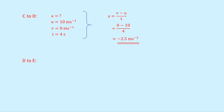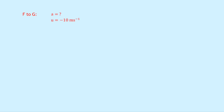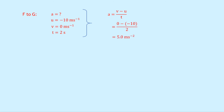For D to E: u equals 0 metres per second, v equals minus 10 metres per second because we're below the x-axis, and time is 2 seconds. So a equals minus 10 minus 0 over 2, giving minus 5.0 metres per second squared. For F to G: u equals minus 10 metres per second, v equals 0 metres per second, and t equals 2 seconds. So a equals 0 minus minus 10, which is plus 10, divided by 2, giving 5.0 metres per second squared.